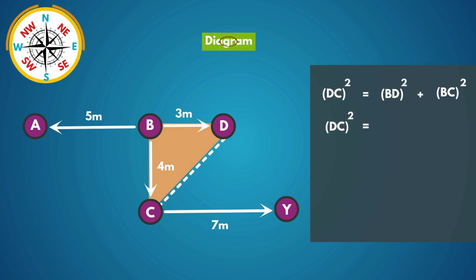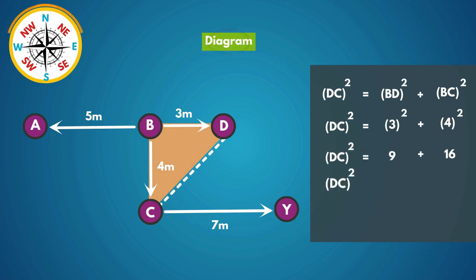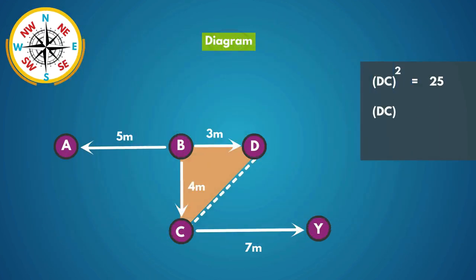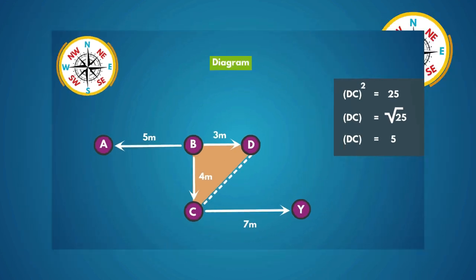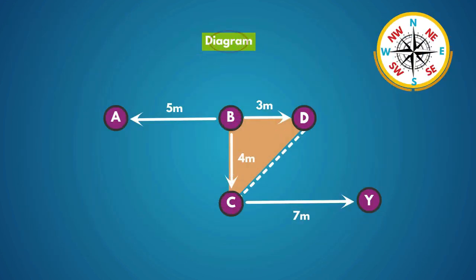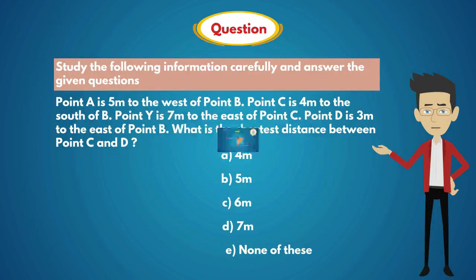DC squared is equal to 3 squared plus 4 squared. DC squared is equal to 9 plus 16. DC squared is equal to 25. DC is equal to the square root of 25, that is DC is equal to 5. After solving this, we get the distance between point C and point D is 5 meters. So, the answer is option B — 5 meters.